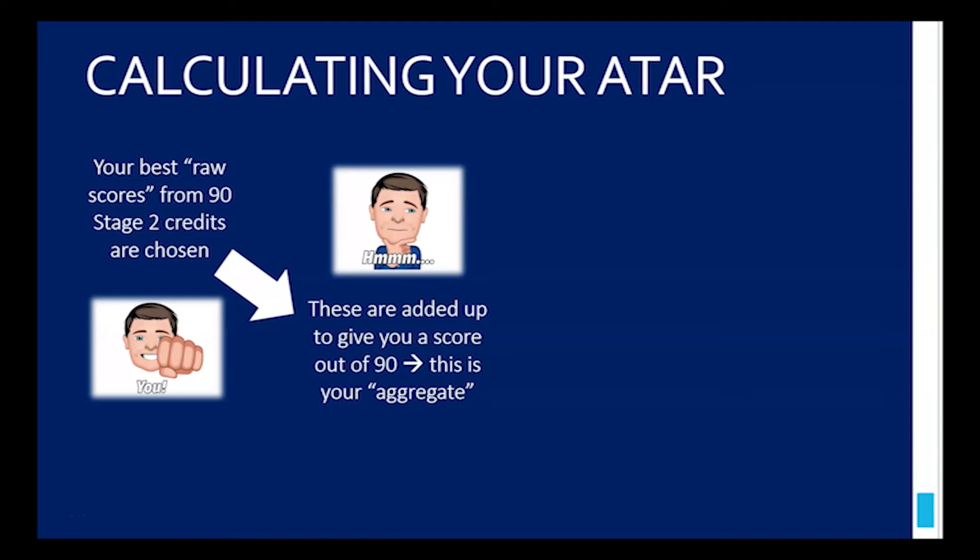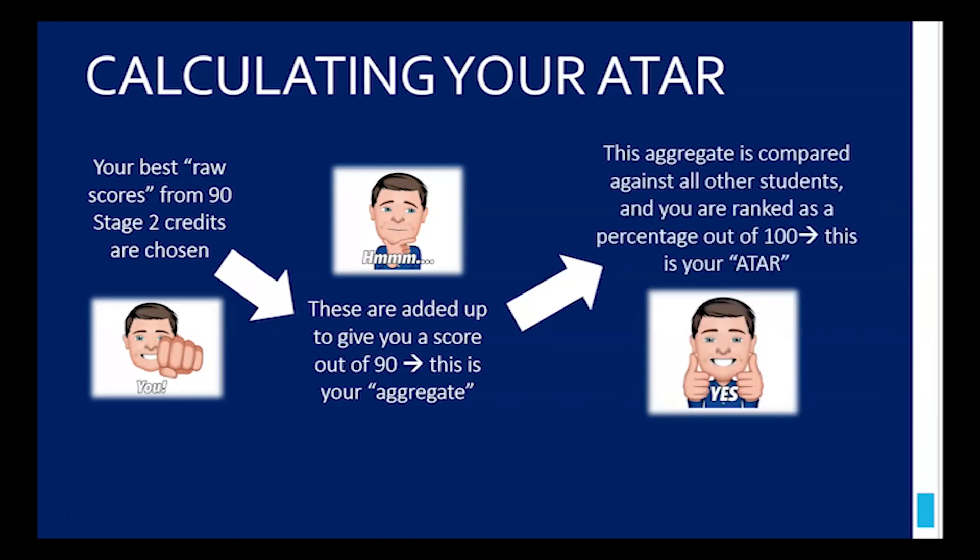What they do is add these up to give you a score out of 90. That's called your aggregate. You get your raw scores, combine them all together out of 90 to give you your aggregate. They then convert that to an ATAR. That aggregate is compared against all the other students, and you are ranked as a percentage out of 100. This is your ATAR.